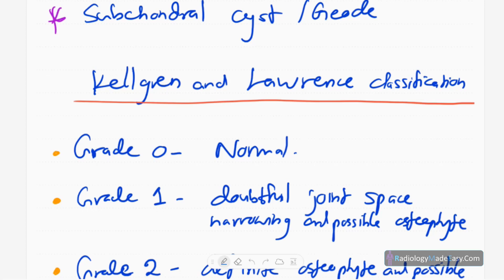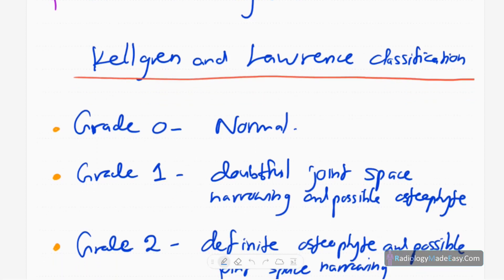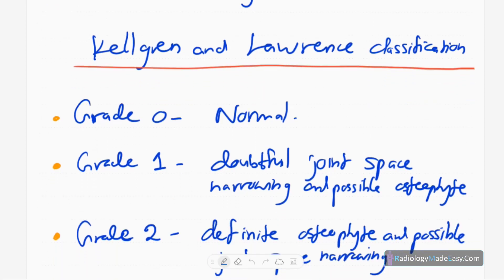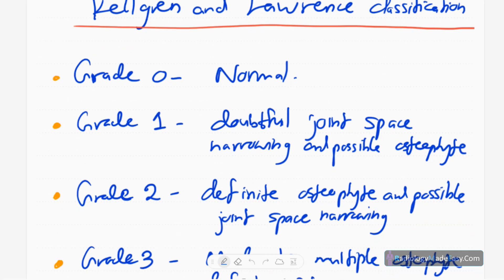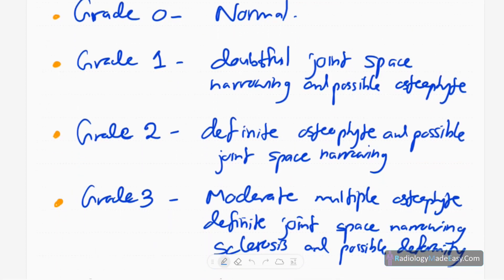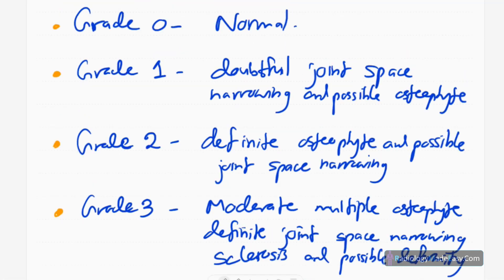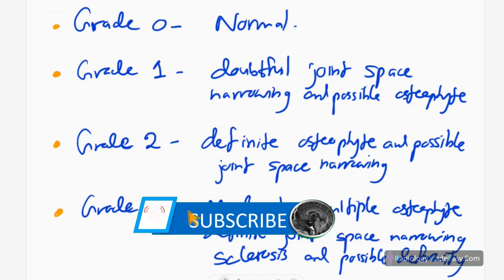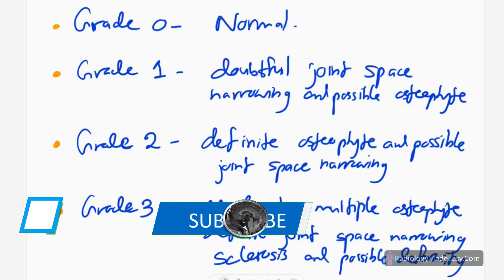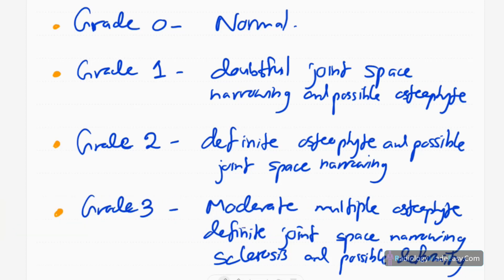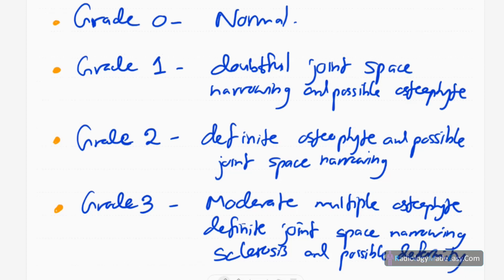There are several classifications of osteoarthritis. One method is the Kellgren and Lawrence classification, which is mainly an X-ray based classification. Grade zero means normal. Grade one means doubtful joint space narrowing and possible osteophyte formation. In grade two, there are definite osteophytes and possible joint space narrowing.